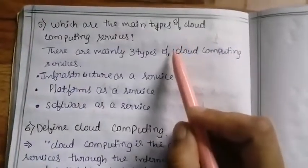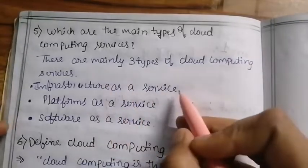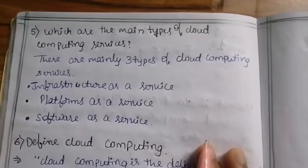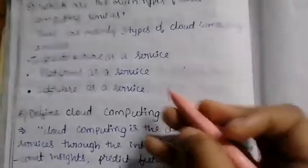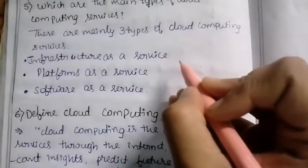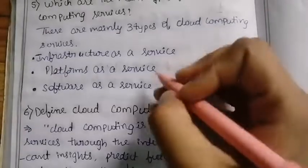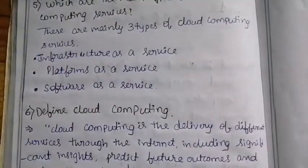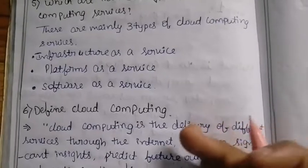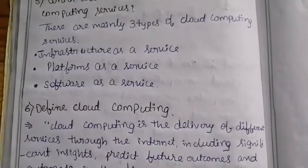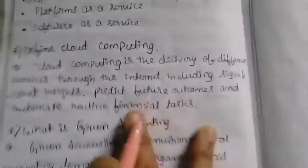What are the major types of cloud computing services? There are mainly three types: Infrastructure as a Service (IaaS), Platform as a Service (PaaS), and Software as a Service (SaaS). IaaS provides infrastructure and network connectivity through the cloud. PaaS provides platform-based cloud computing services. SaaS provides software through the cloud.